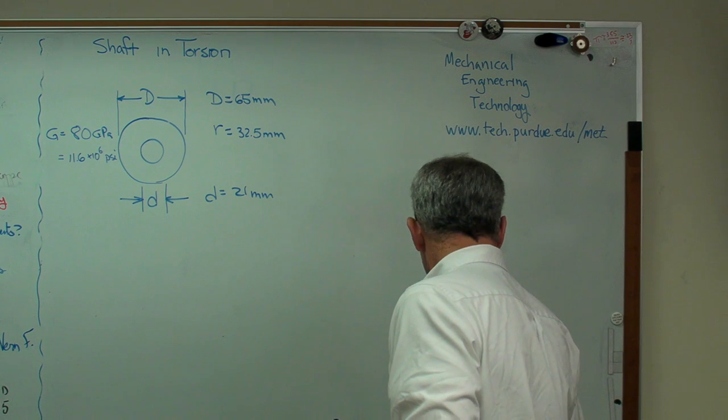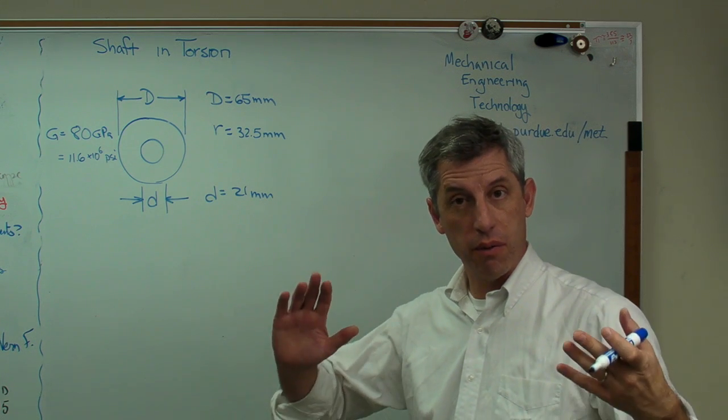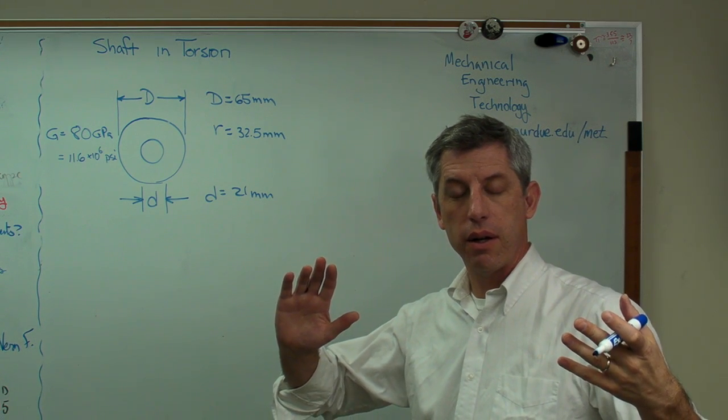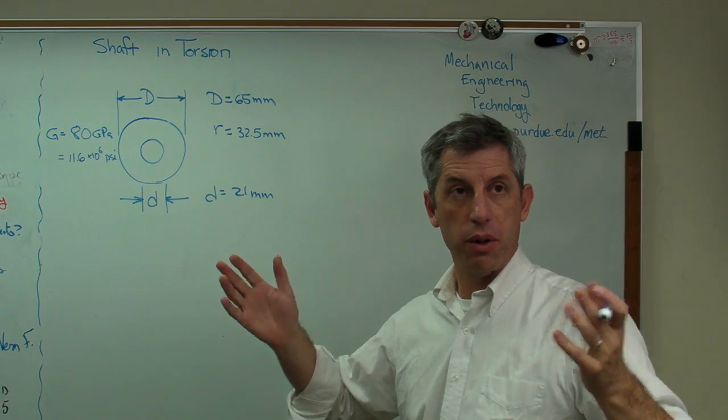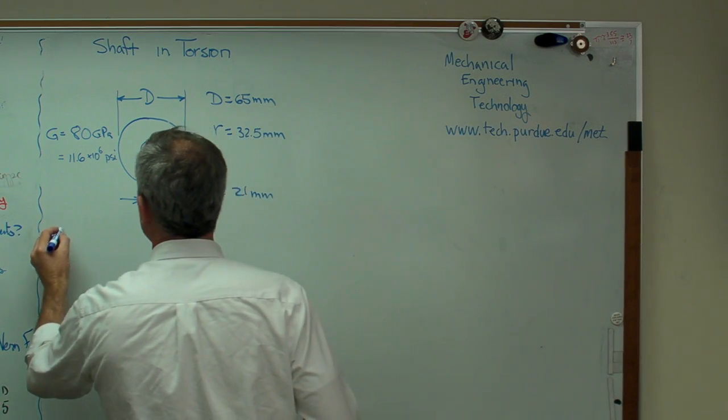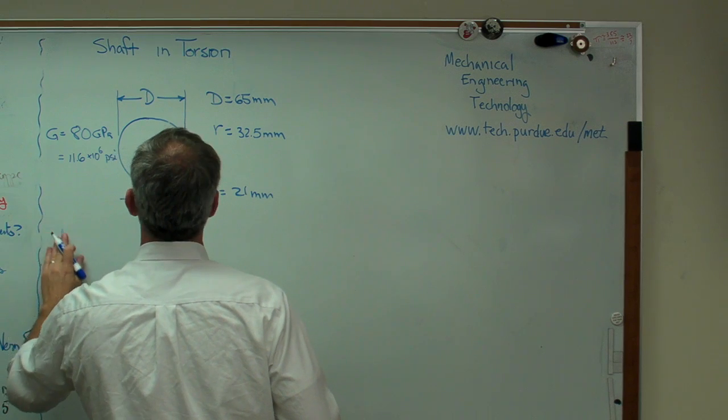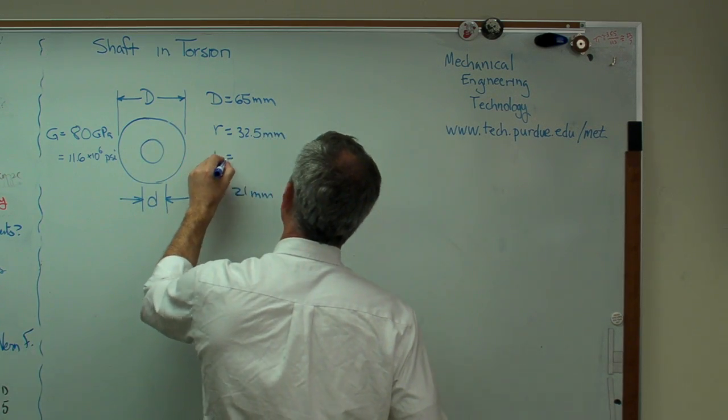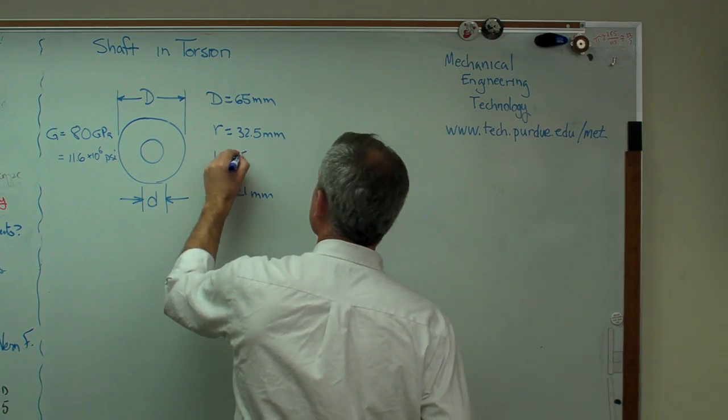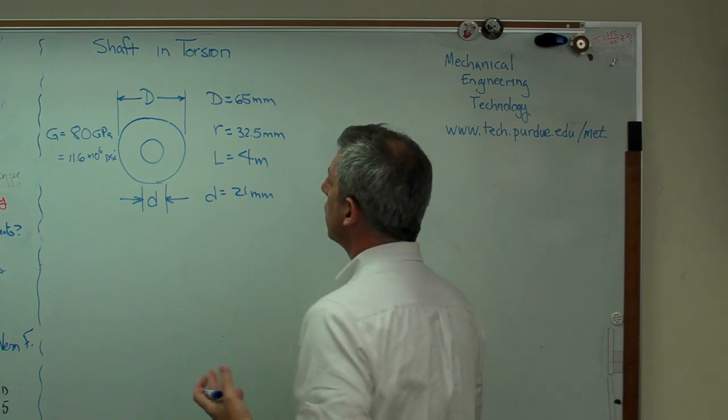And the last thing we're going to need to know is a length. If we're going to find a torsional deformation twist angle, we need to know a length. So the length, let's see, let's put that right there. And I think I made that four meters. So there we go.